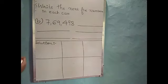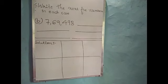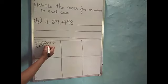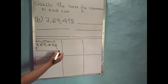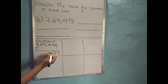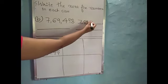Next we will solve B1: 7,69,498. We should add 1 to the given number to get the next number. So I will write the given number in the solution box: 7,69,498. If we add 1 to this number, then 8 plus 1 is 9. Write remaining numbers as it is: 4, 9, 6 and 7. So the next number is 7,69,499.